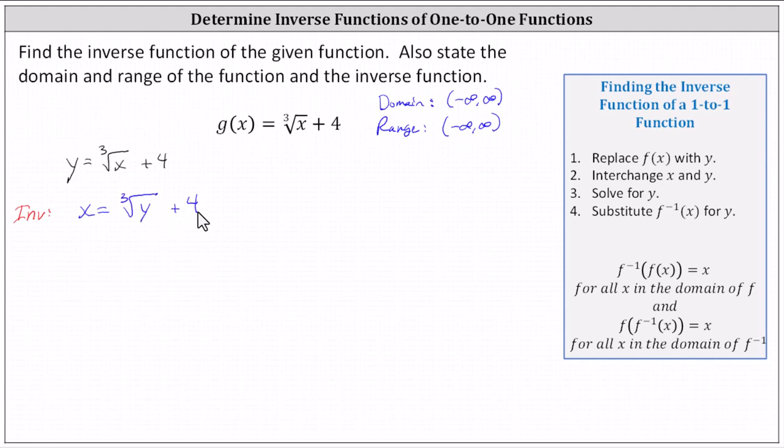And now we need to solve for y. The first step is to isolate the cube root of y by subtracting four on both sides, which gives us x minus four equals the cube root of y.